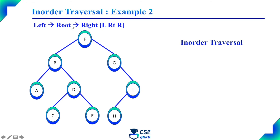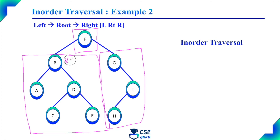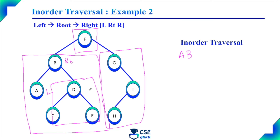Next example: the root node is F; B, A, D, C, E form the complete left subtree; and G, H, I form the right subtree. First, solve the left subtree as per inorder traversal. In this left subtree, root node is B and left child is A. So first print A (left child), then B (root node), and the right child is again a subtree — root node D, left child C, right child E. Inorder traversal of that subtree is C, then D, then E.